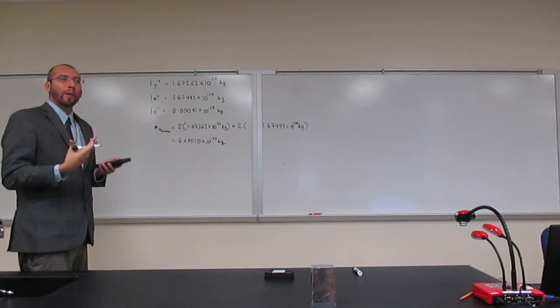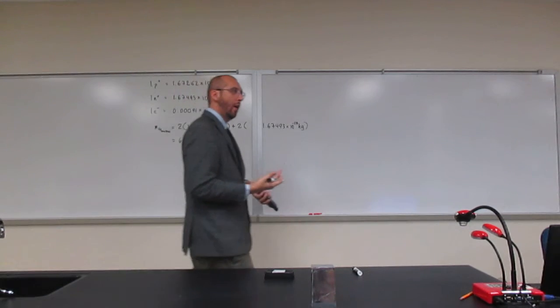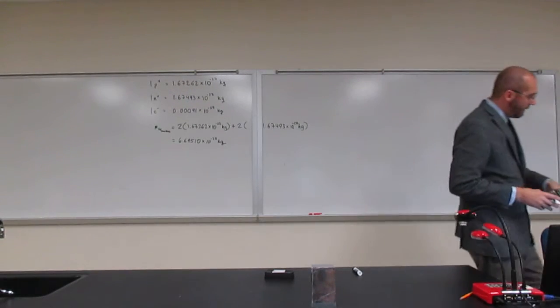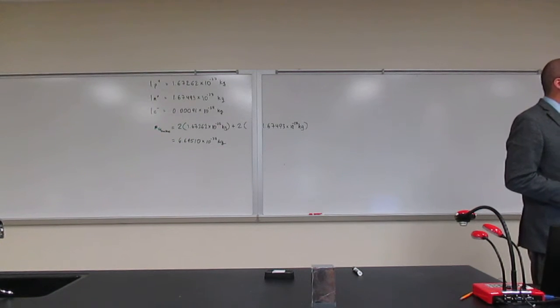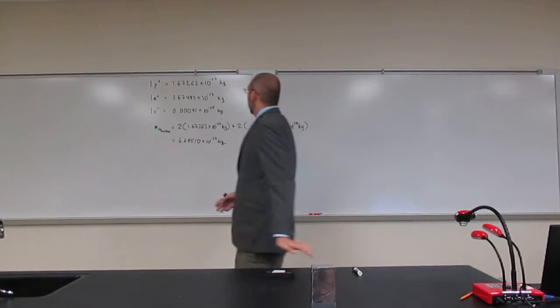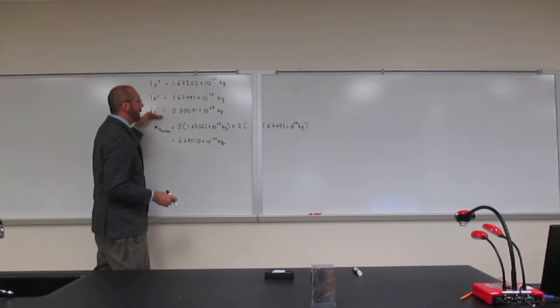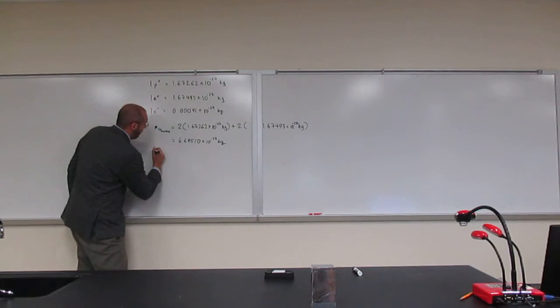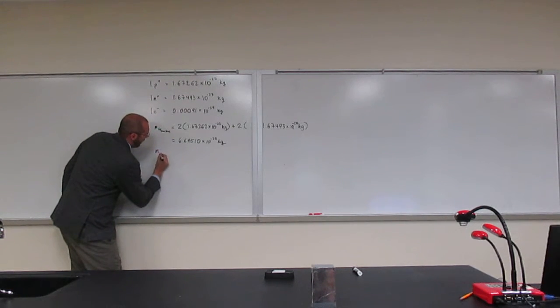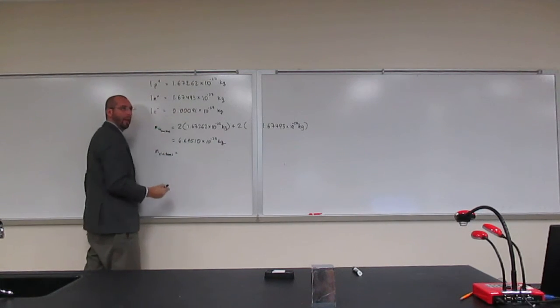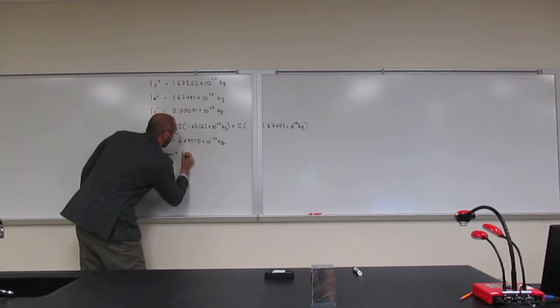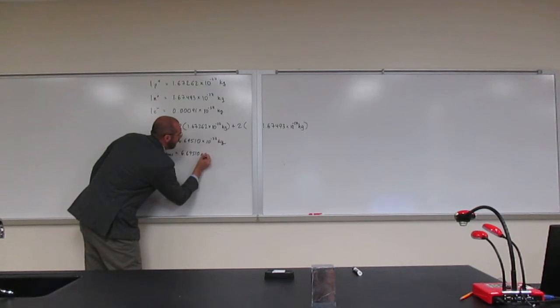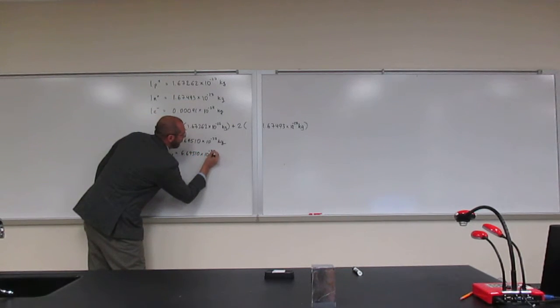So a lot of people got to that part, but it's this next step that was hard, okay? Because it's asking us how many electrons equals that mass. Well, we have a conversion factor, and we've got to always remember when something equals something else, that's a conversion factor. So what are we really trying to do now? We're trying to find the number of electrons in this mass. So what we're going to do is write down that number again, 6.69510 times 10 to the negative 27 kilograms.